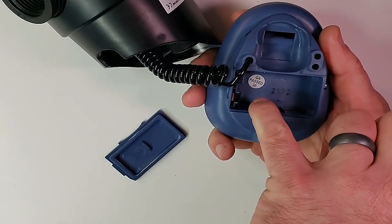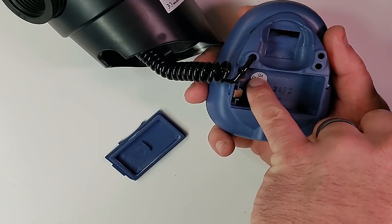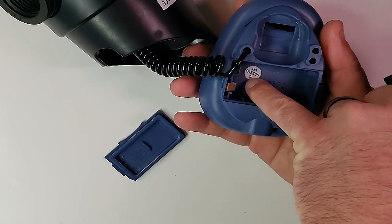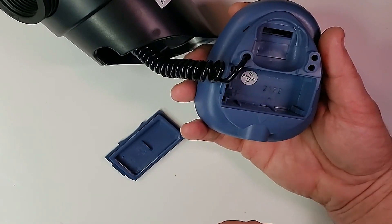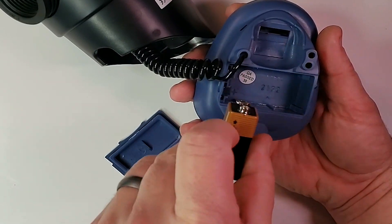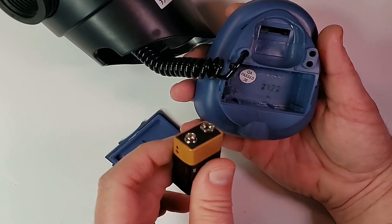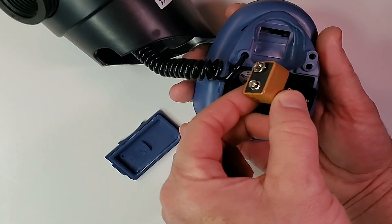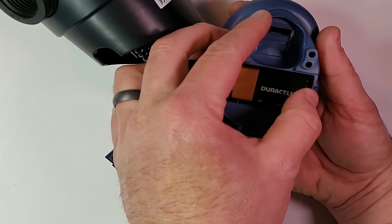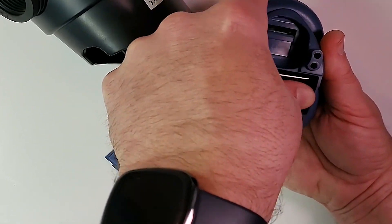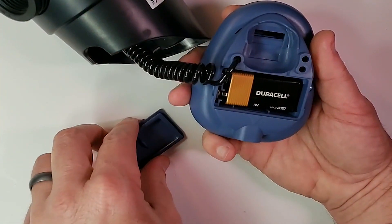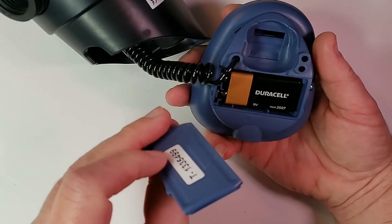Now we can see our plus and our minus signs engraved down in here. We take our plus, which is the little one, we're going to line that up and slide our nine volt battery in. Should have power attached to that now.